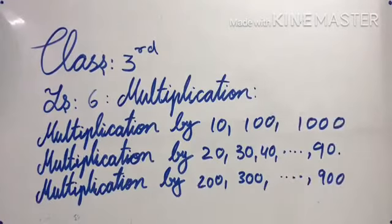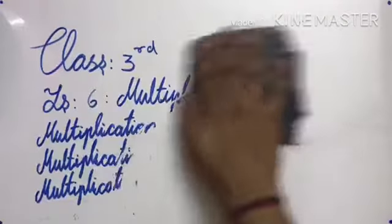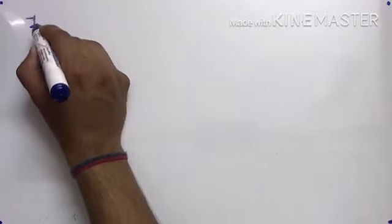So in this class we will learn about multiplication by 10, 100, 1000, multiplication by 20, 30, 40, and so on till 90, and multiplication by 200, 300, and so on to 900. So let us start multiplication by 10, 100, and 1000. First question: